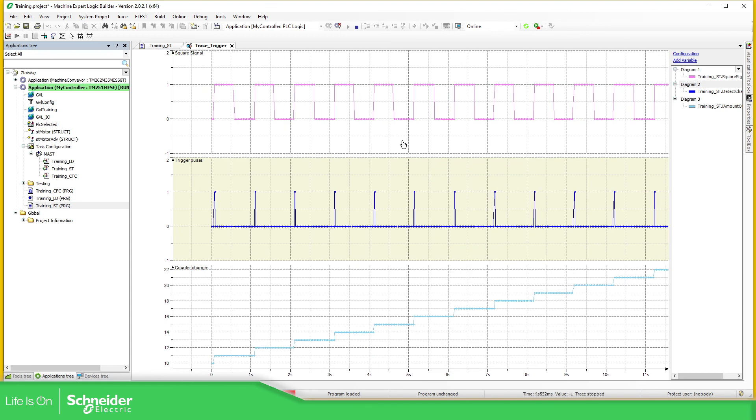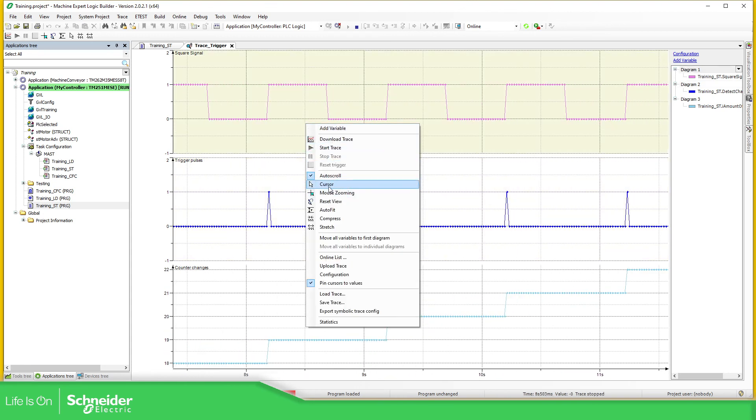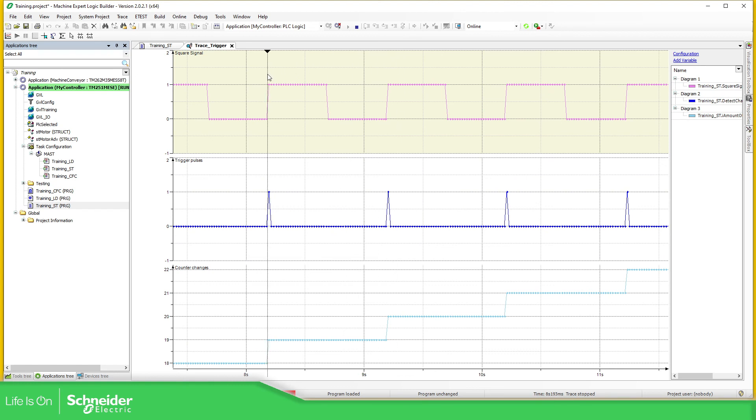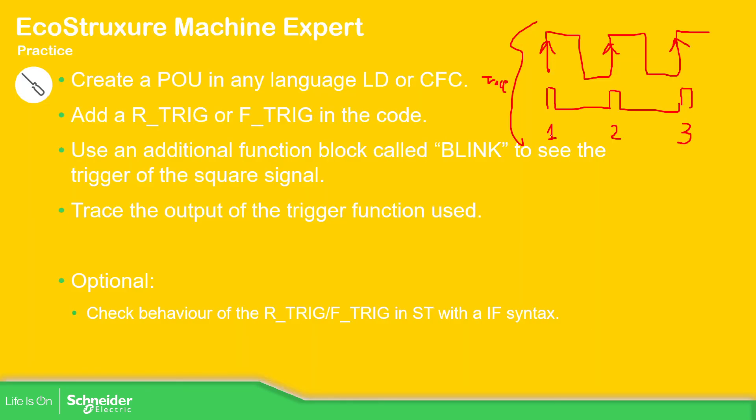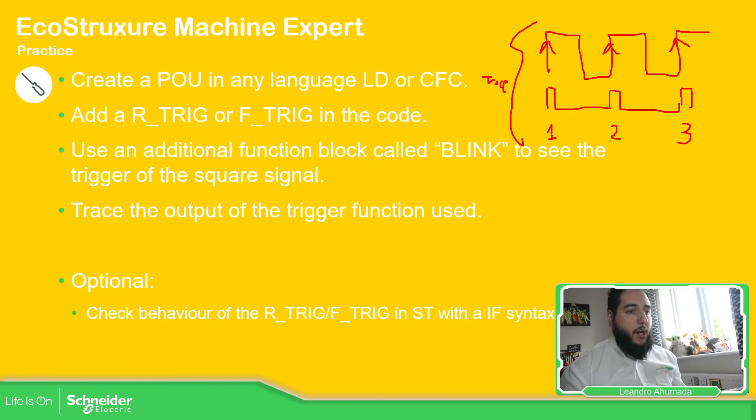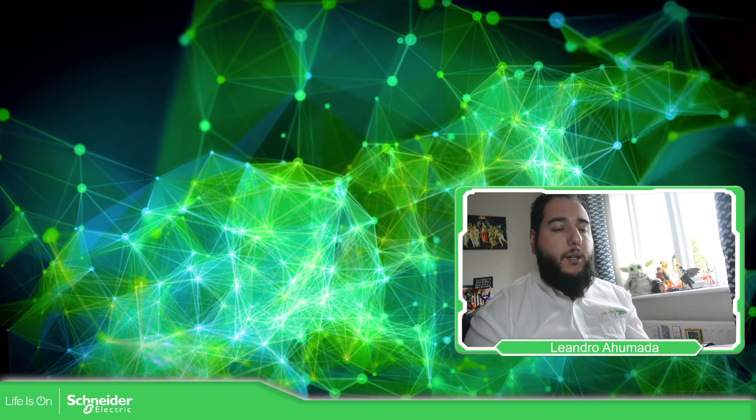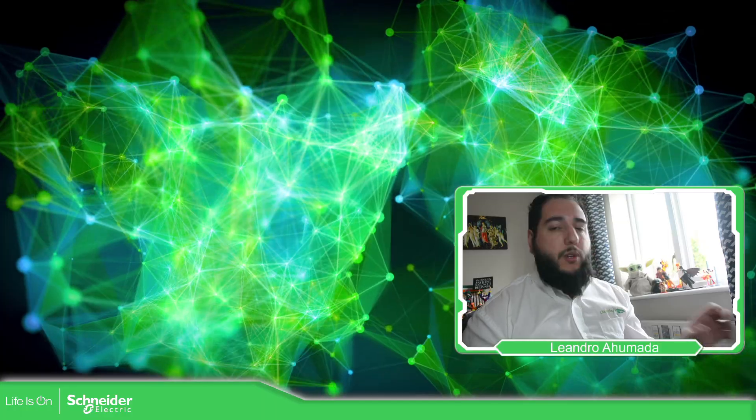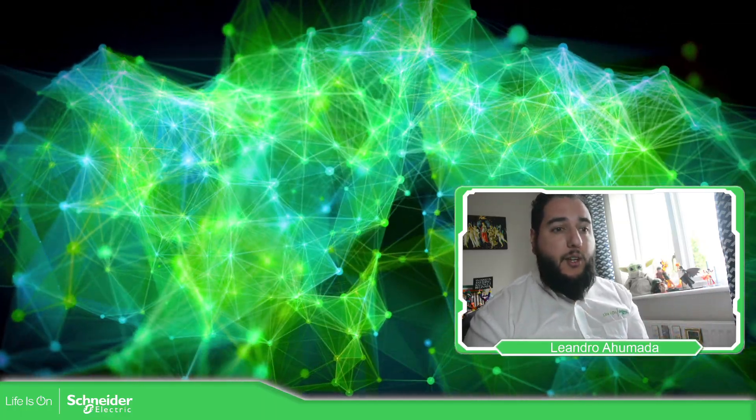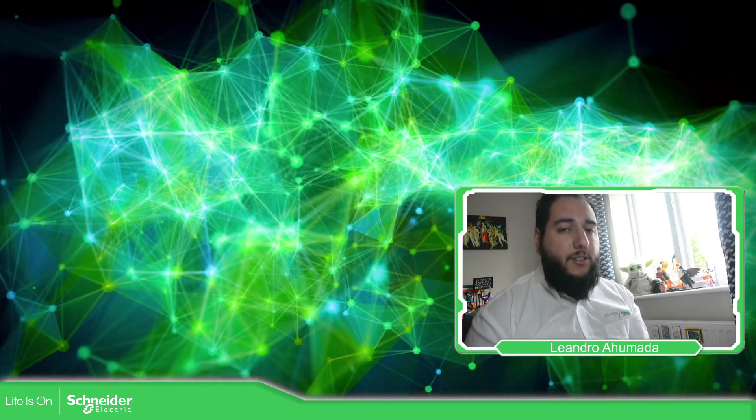So this is how it works with the triggers that we have. So I really want to show you the main idea on how to use the trigger in this part. The cancel is simple. You can use a ladder or CFC or a structure test. It's the same. It probably changed the way you need to pull the logic but it's the same and simple. So thank you very much for watching this video and I see you on the next one.